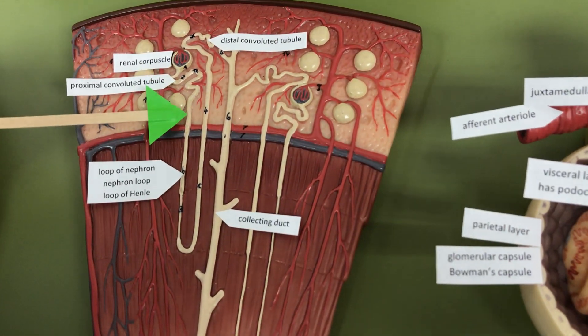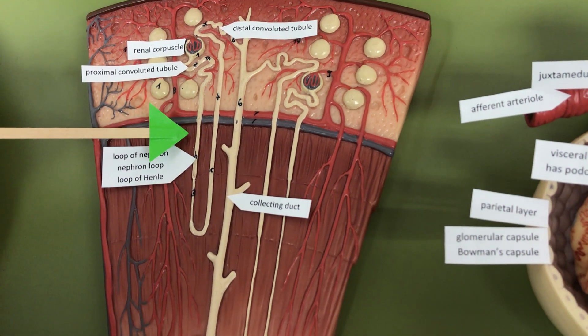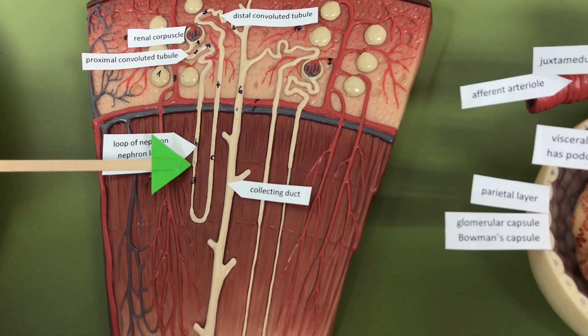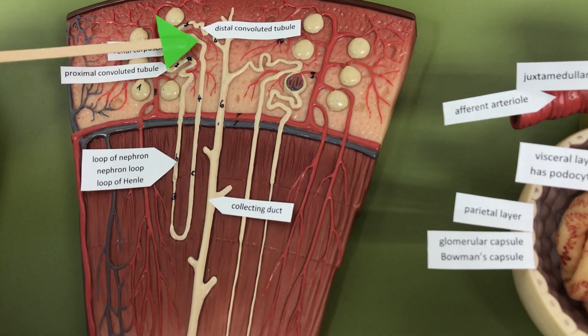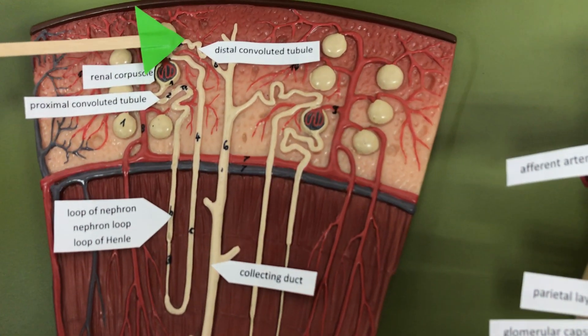And then the filtrate is going to travel down the loop of nephron, nephron loop or loop of Henle, all same structure. And then it will travel through the distal convoluted tubule.